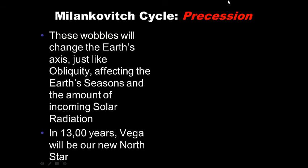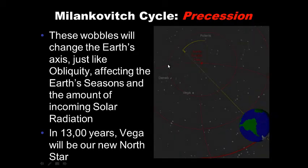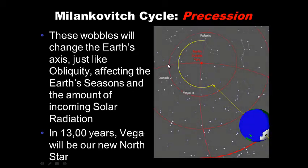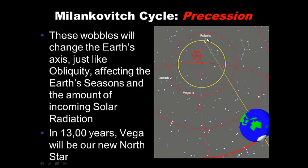These wobbles will change Earth's axis like obliquity, affecting Earth's seasons and the amount of incoming solar radiation. In about 13,000 years, Vega will be our new North Star. Here is Polaris, the current North Star, and here is Vega.